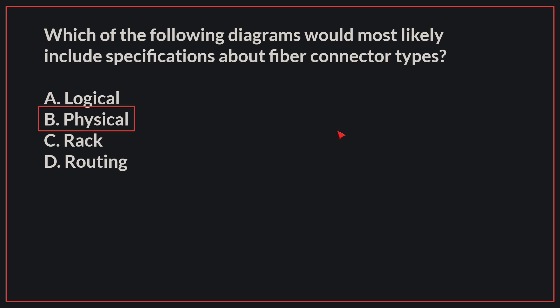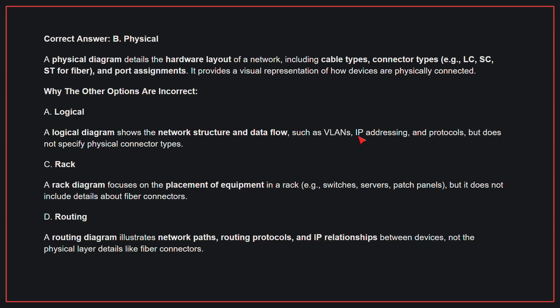Which of the following diagrams would most likely include specifications about fiber connector types? The correct answer is B, Physical. A physical diagram details the hardware layout of a network, including cable types, connector types, and port assignments. It provides a visual representation of how devices are physically connected.